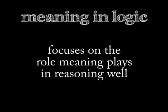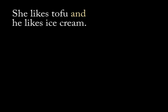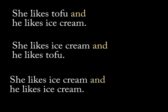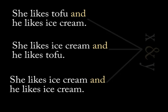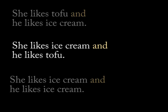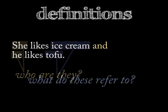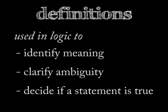Meaning matters in logic too, but here it's not so much about how context and communication impact meaning, but about the role meaning plays in reasoning, arguing, and thinking. I can take thoughts like 'she likes tofu and he likes ice cream,' 'she likes ice cream and he likes tofu,' 'she likes ice cream and he likes ice cream,' and reduce them to a common pattern: X and Y. That pattern is the logical form we see in all three sentences. Once we assign meanings to X and Y, we get three sentences and can tell if they're right or not.